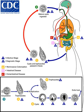Cysts of Entamoeba can survive for up to a month in soil or for up to 45 minutes under fingernails. Invasion of the intestinal lining results in bloody diarrhea. If the parasite reaches the bloodstream it can spread through the body, most frequently ending up in the liver where it can cause amoebic liver abscesses. Liver abscesses can occur without previous diarrhea.